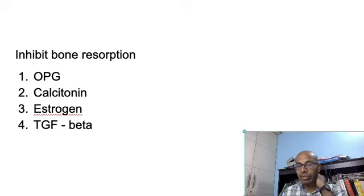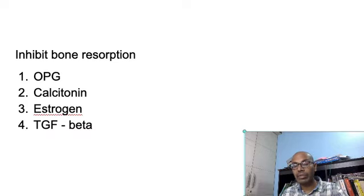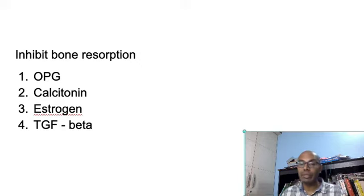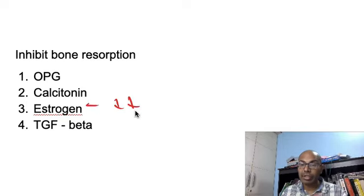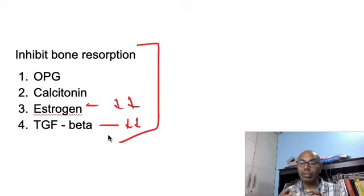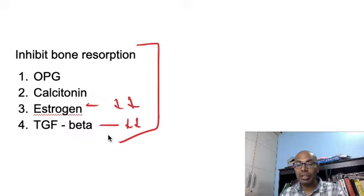Let us now summarize what inhibits bone resorption. Osteoprotegerin binds to RANK ligand and sequesters it, preventing osteoclast activation. Calcitonin decreases bone resorption by increasing osteoblastic activity. Estrogen decreases RANK ligand release from the osteoblast, increasing bone formation. TGF beta also decreases RANK ligand. The main theme is that inhibition of the RANK ligand pathway inhibits osteoclast activity and thereby decreases bone resorption.